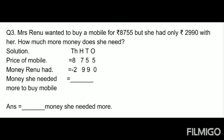Let's read problem sum number 3. Mrs. Daniel wanted to buy a mobile for Rs. 8,755, but she had only Rs. 2,990 with her. How much more money does she need? When we talk about 'more money', that means this is a sign of subtraction. We will start writing the solution of this problem.